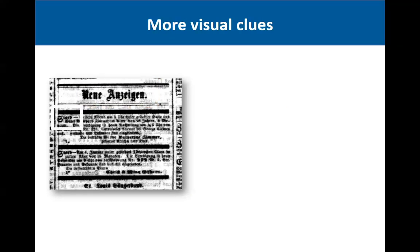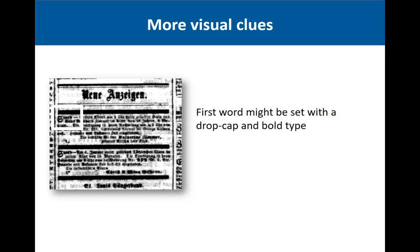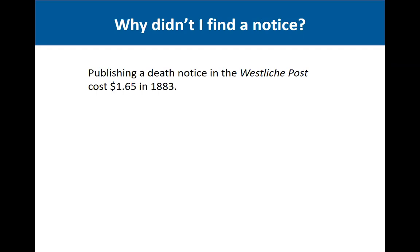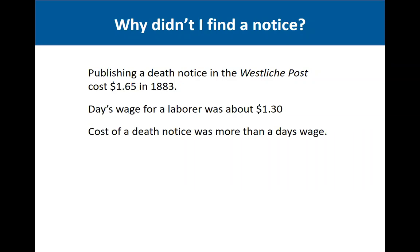If you look on the day of death and four or more days afterwards and don't find a death notice, why might that be? Publishing a death notice in the Westliche Post in 1883 cost $1.65. A day's wage for a laborer in 1883 was about $1.30, so the cost of the death notice was more than a day's wage — it was expensive. Some people just could not afford to publish a death notice for their loved one.